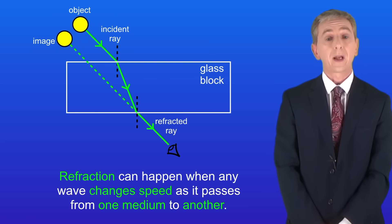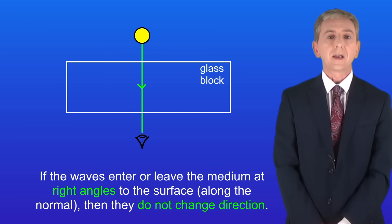Remember that refraction can happen when any wave changes speed as it passes from one medium to another. Now there is one important exception to this. If the waves enter or leave the medium at right angles to the surface, in other words along the normal, then they do not change direction and I'm showing you that here.